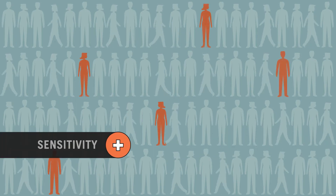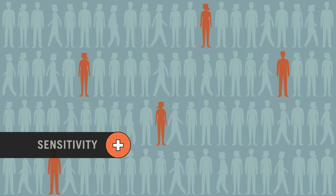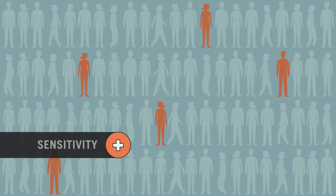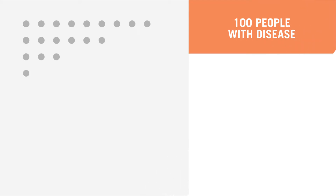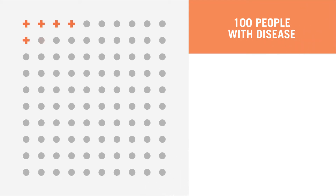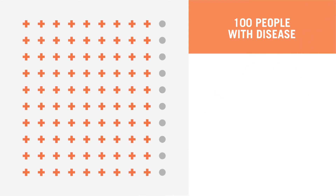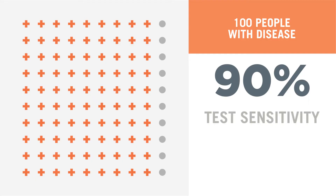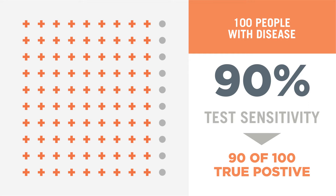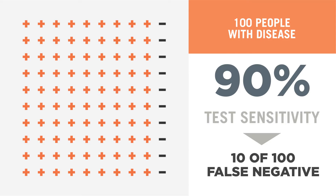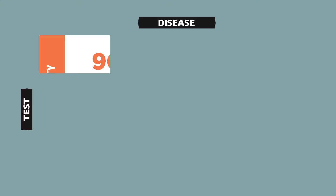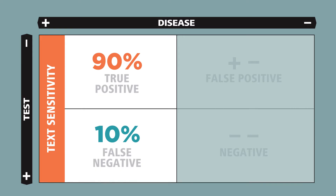Sensitivity measures how often a test is positive in people who have the disease that is being tested for. If we know there are 100 people with the disease and 90 test positive, the test has 90% sensitivity. A test with 90% sensitivity will correctly return a positive result for 90% of people who have the disease, but means a 10% miss rate of people with negative test results who have disease, or false negatives. Here's how this looks in a traditional 2x2 table.